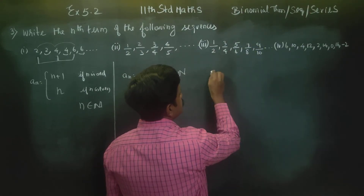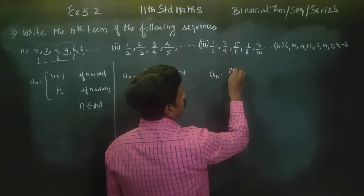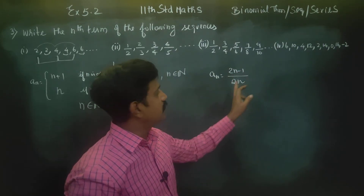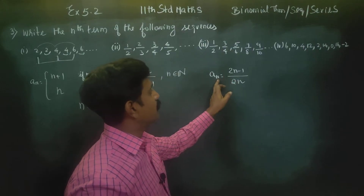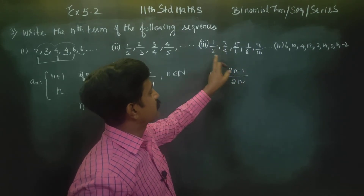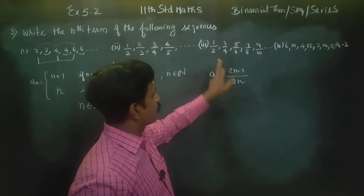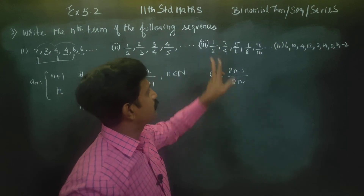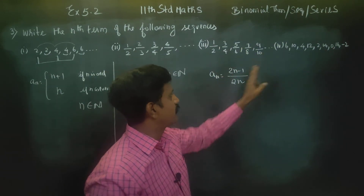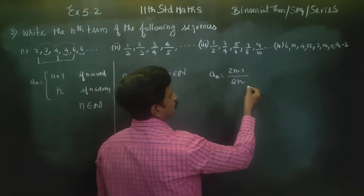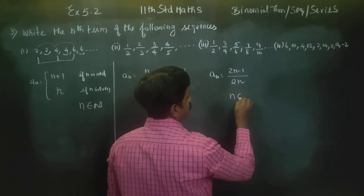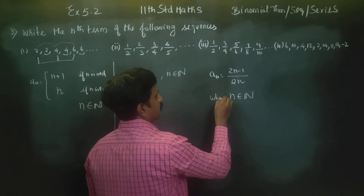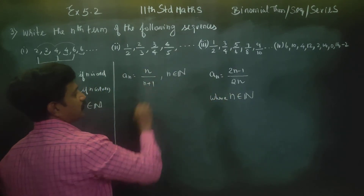The odd number formula is 2n minus 1, and the even number formula is 2n. For example, n equals 1 gives 2(1) minus 1 equals 1; substituting 2 gives 2(2) equals 4; 4 minus 1 equals 3. So the odd number formula is 2n minus 1 and the even number formula is 2n, where n belongs to natural numbers.